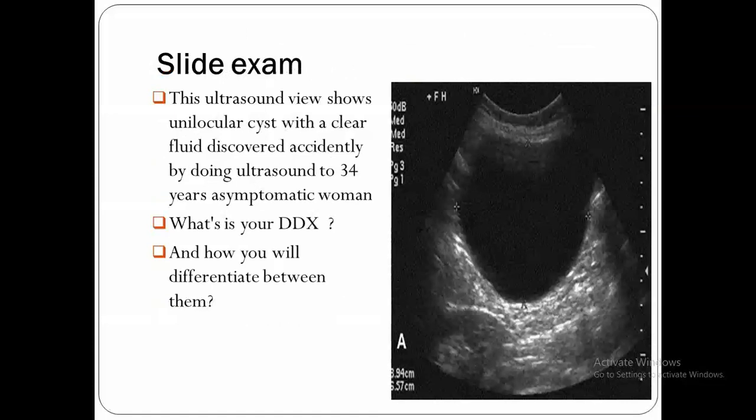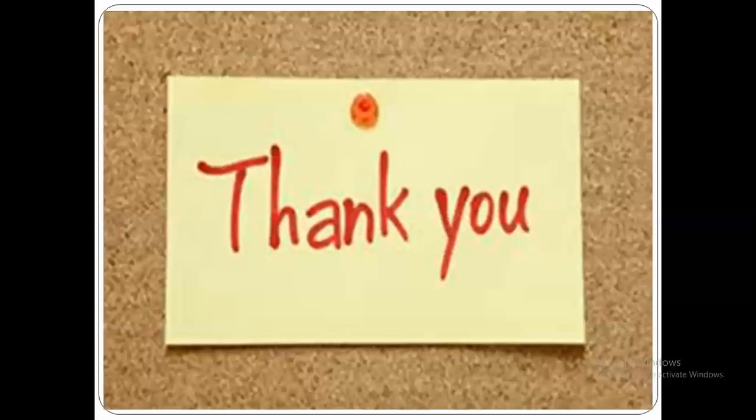Slide exam: This ultrasound view shows a unilocular cyst with clear fluid, discovered accidentally on ultrasound in a 34-year-old asymptomatic woman. Give the differential diagnosis, and explain how you would differentiate between these differential diagnoses.